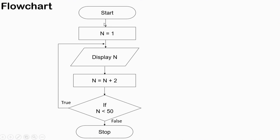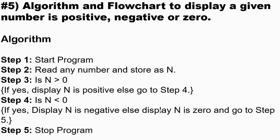In the flowchart we will start, then initialize the count to one and store it as N, then display N. Then N equals N plus two — we do this so that starting from one, one plus two gives three, so it displays odd numbers. The condition checks: is N less than 50? If yes the condition is true and it will loop. It continues until N becomes more than 50, then the condition becomes false and it will stop.